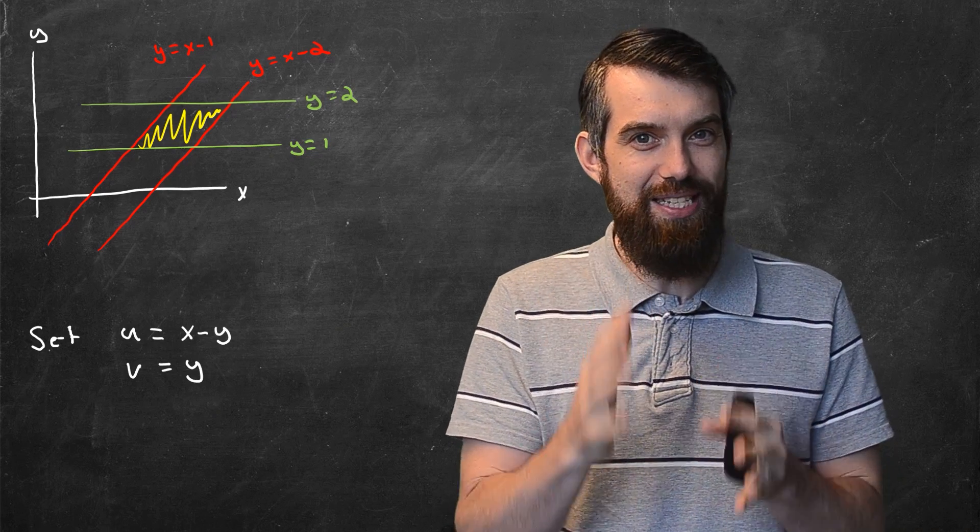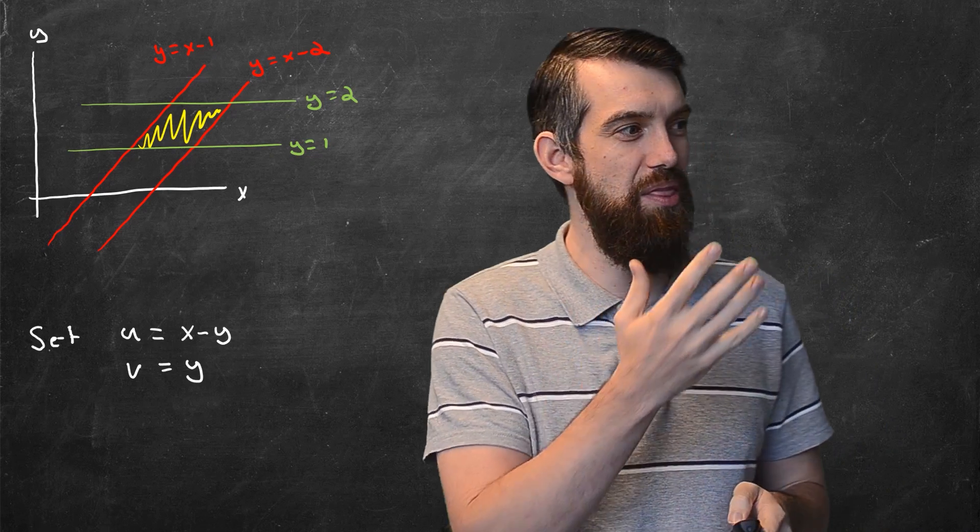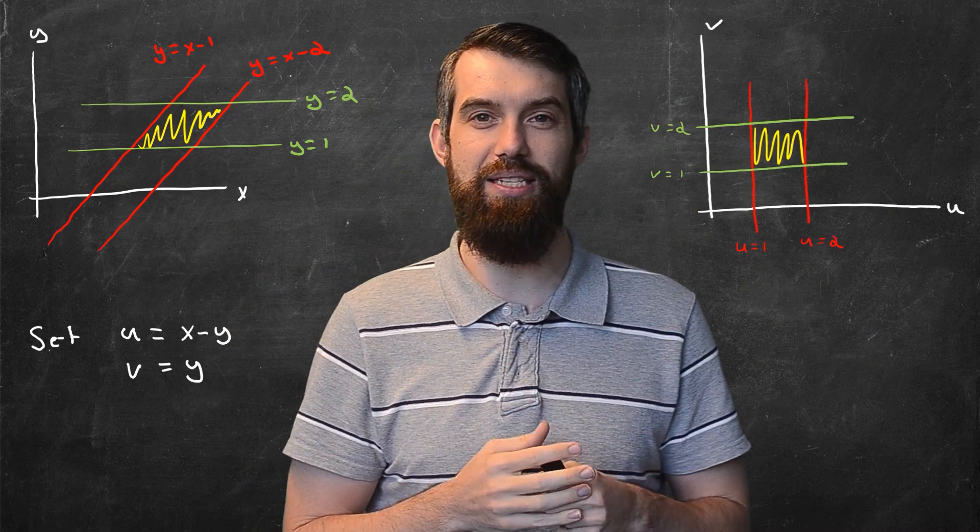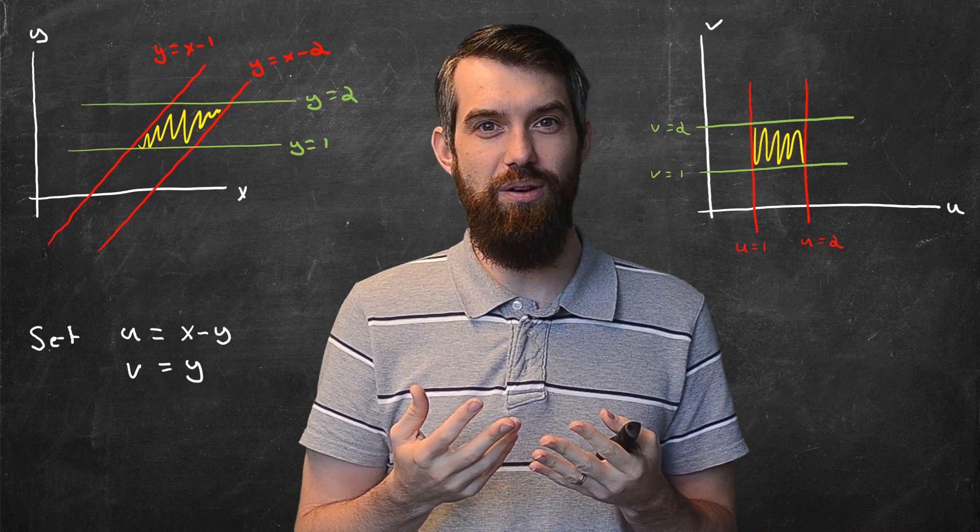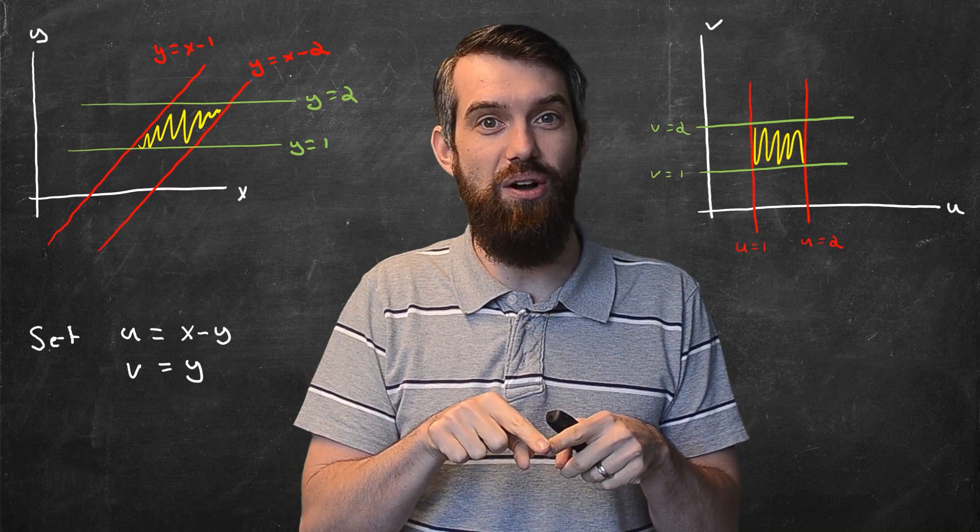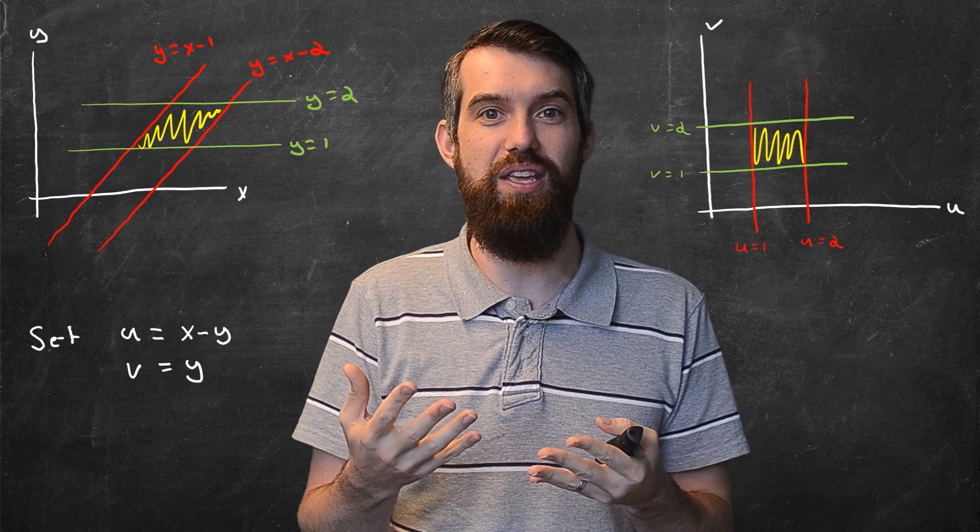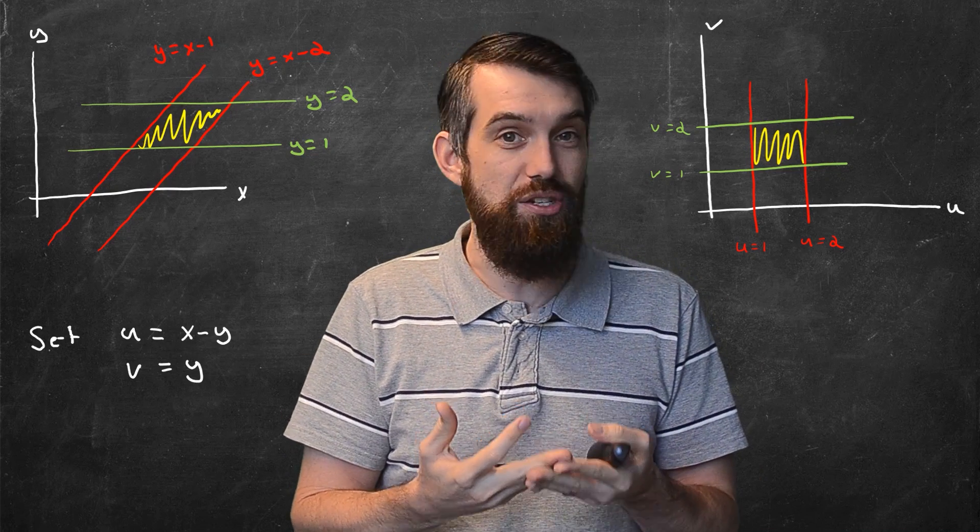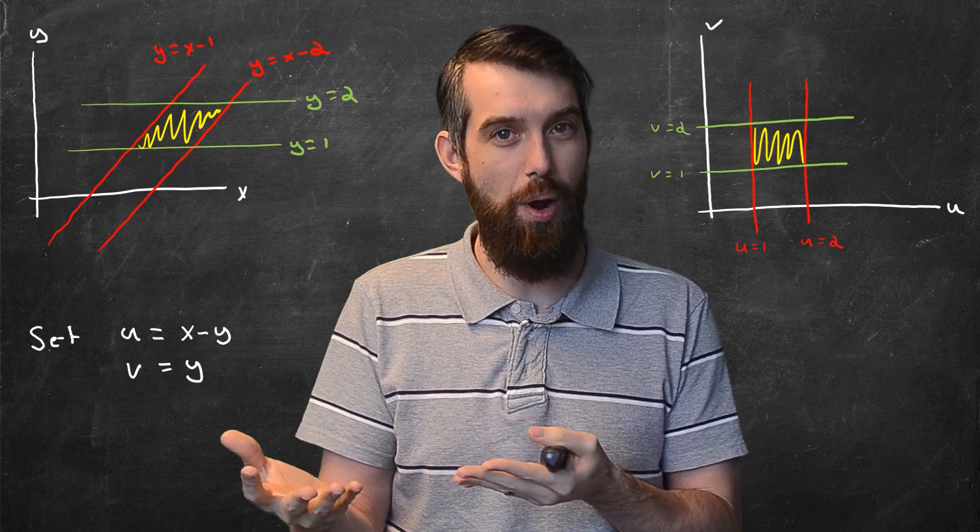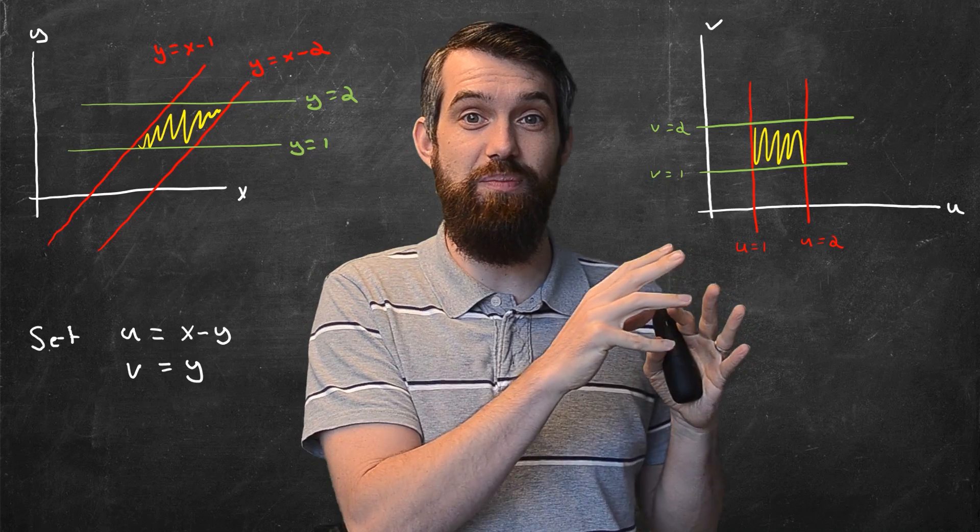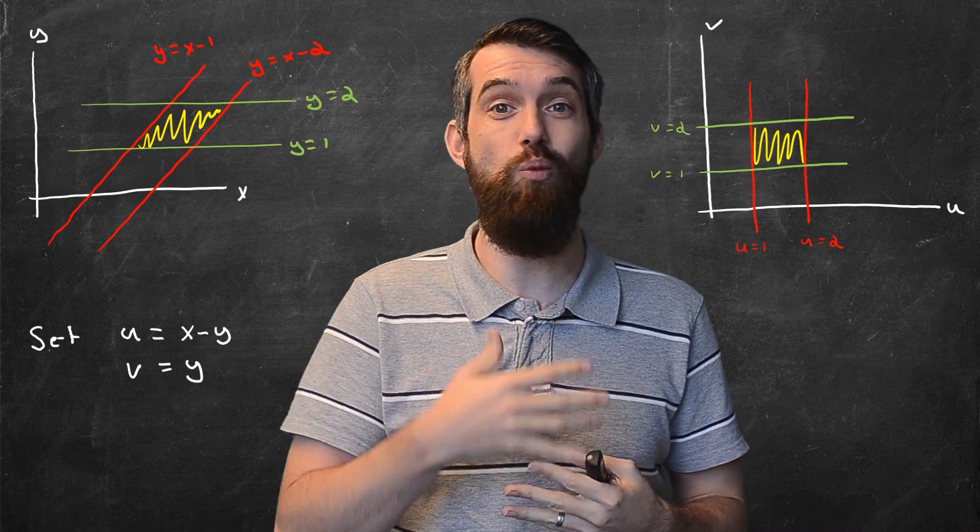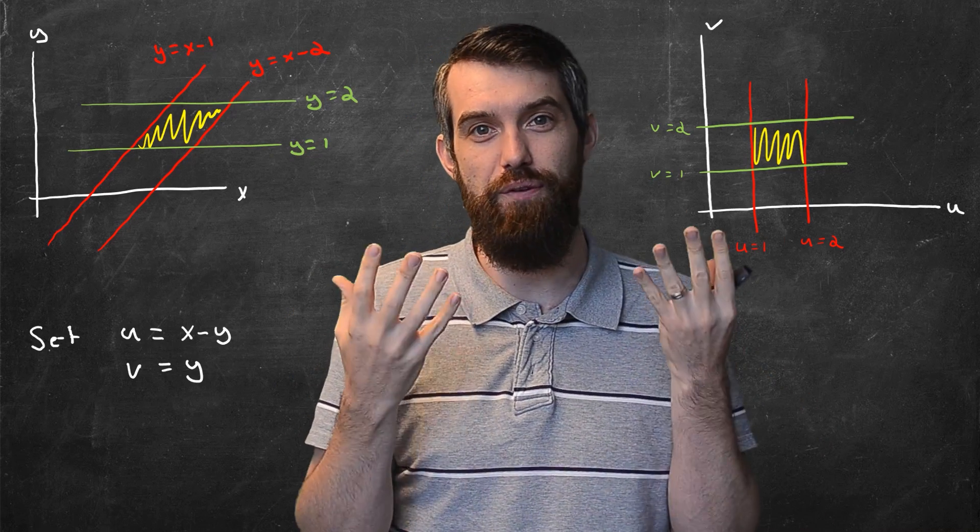Indeed, if I tried to draw the exact same region but now in the uv-plane, that is expressing it in terms of u and v as opposed to x and y, then what I get is just a rectangle. It's just the rectangle where the v values are between 1 and 2 and the u values are between 1 and 2. So my plan is that this is going to be way easier to integrate in this coordinate system because my limits of integration are going to be 1 and 2 for u and 1 and 2 for v.